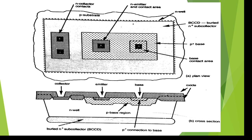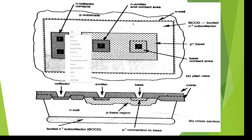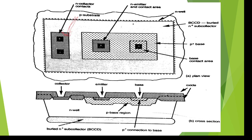Looking at the top view as shown in the textbook, the collector terminal is visible at the top, along with the emitter and base terminals. So the top view shows the emitter, base, and collector terminals, which corresponds to the same structure seen from a front view.